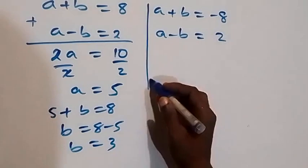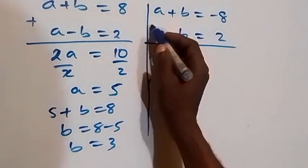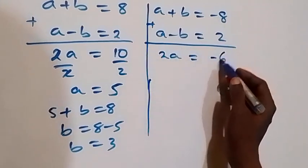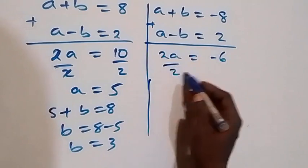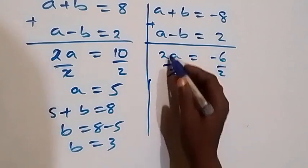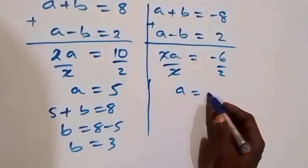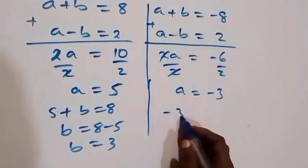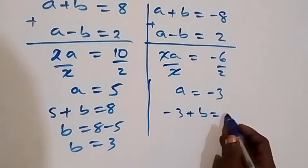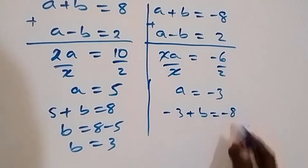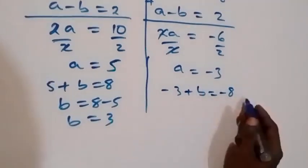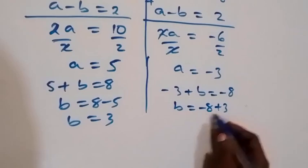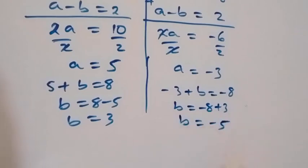For the second case, when A plus B equals minus 8 and A minus B equals 2, adding gives 2A equals minus 6, so A equals minus 3. Substituting back, minus 3 plus B equals minus 8, so B equals minus 8 plus 3, giving B equals minus 5.